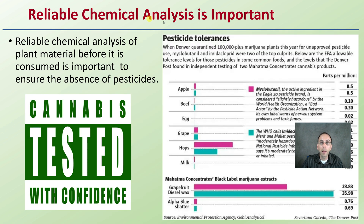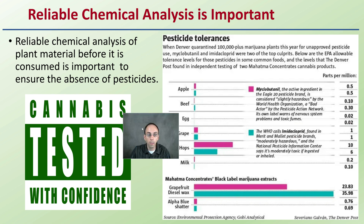Reliable chemical analysis is important when we're looking at testing in general. Reliable chemical analysis of plant material before it's consumed is important to ensure the absence of pesticides. Cannabis should be tested with confidence.